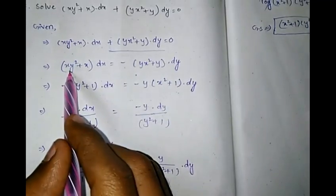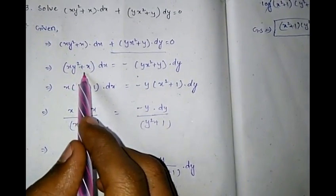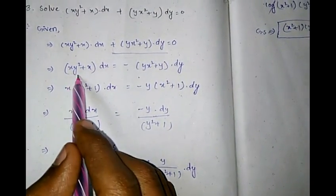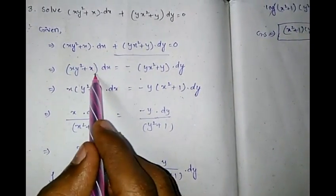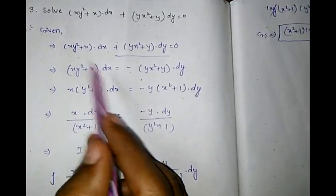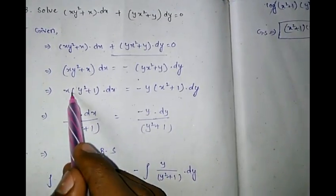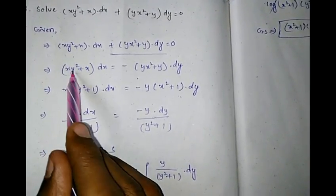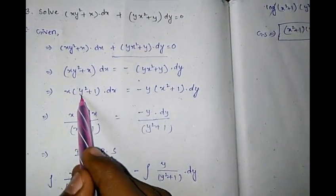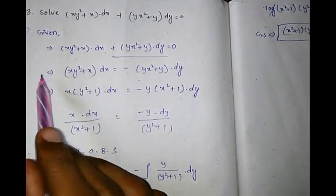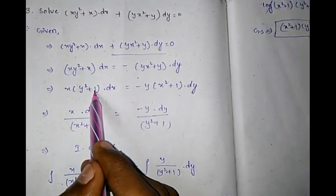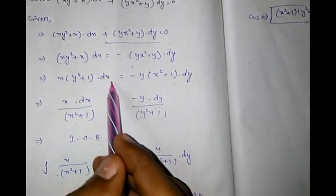From the dx term, xy² + x, we take x as common: x(y²+1)dx. Similarly from the dy term, yx² + y, we take y as common: y(x²+1)dy.